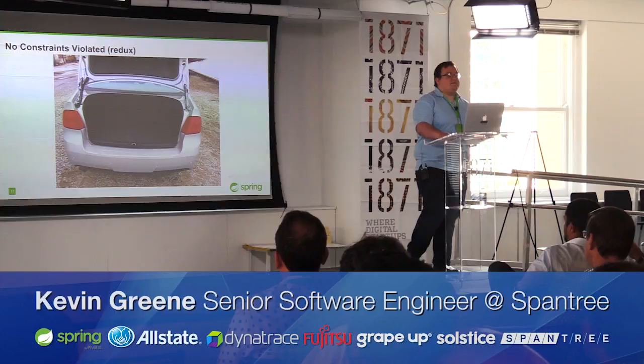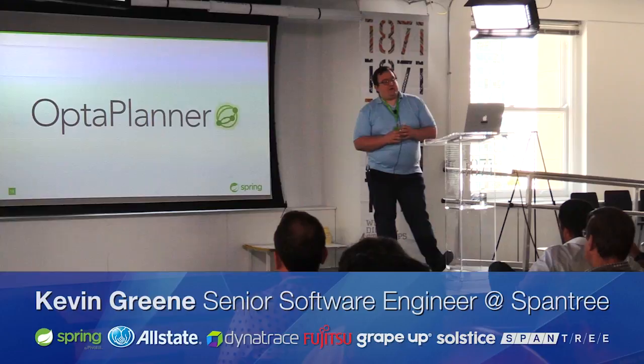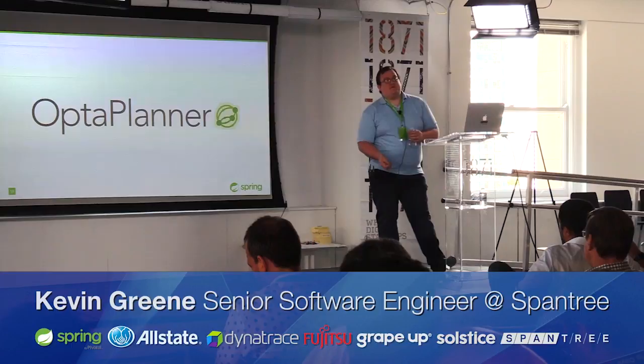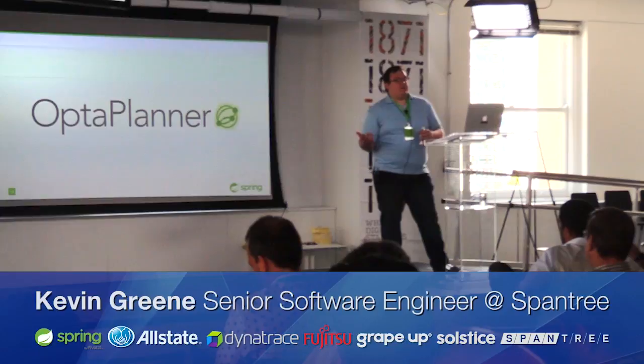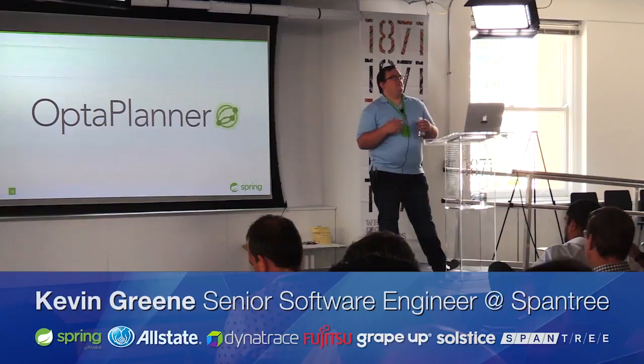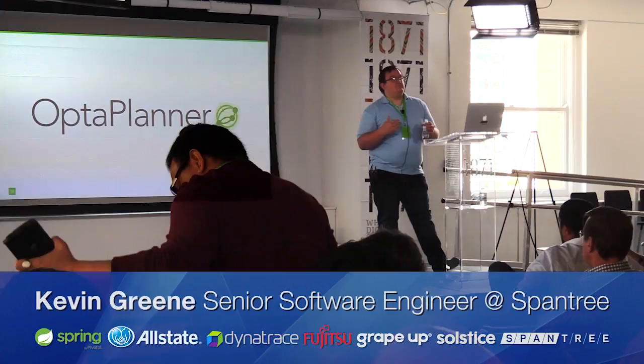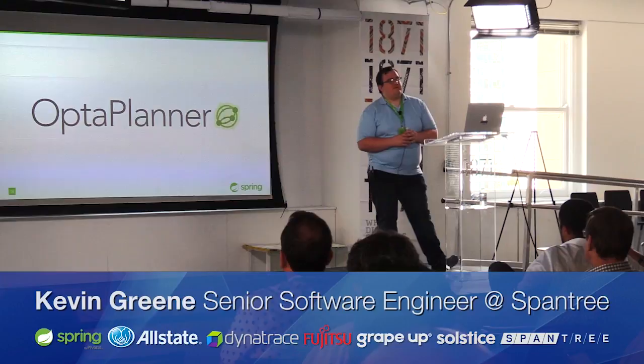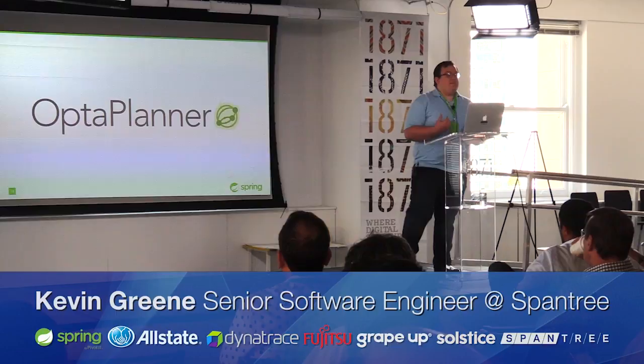The tool I use to help solve these problems is called OptiPlanner. OptiPlanner is an open source Java-based library that's essentially just a constraint solver. At a minimum, you give it the facts of the problem, the rules of evaluating whether a solution is good or bad, and let it go. There are a lot of different customizations, but to dig into this, we need a problem that's a little bit more complex than buying four items and packing a car.